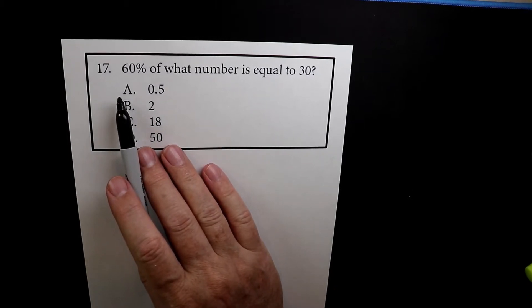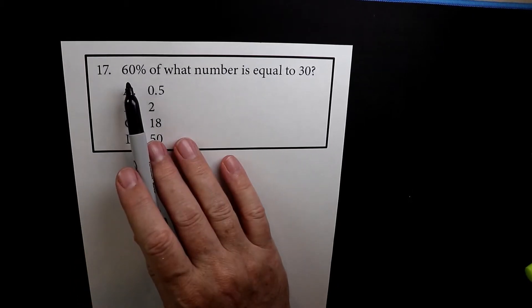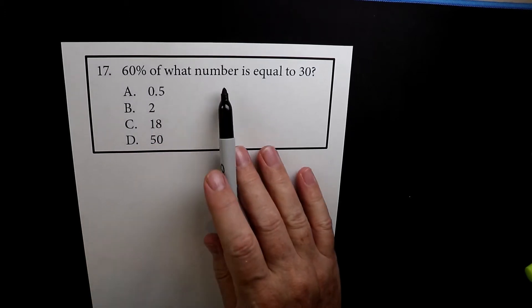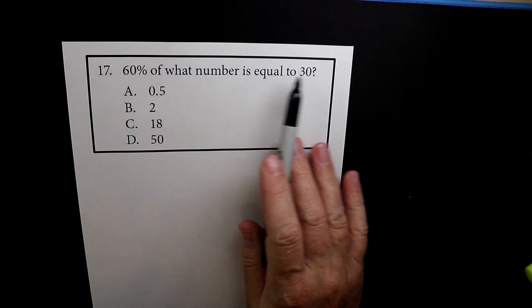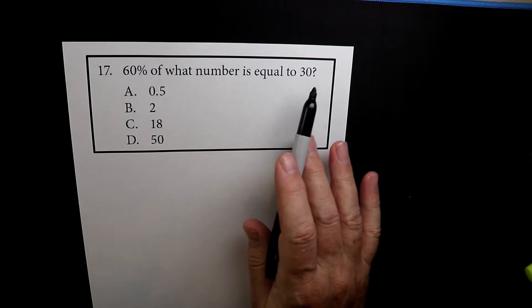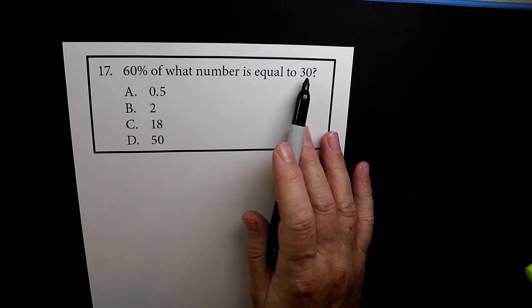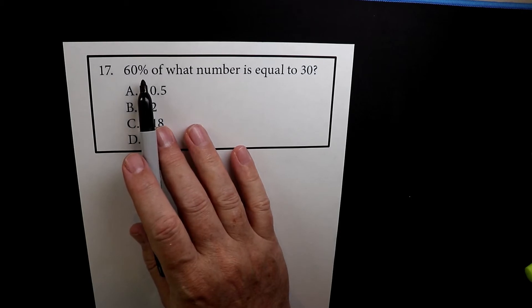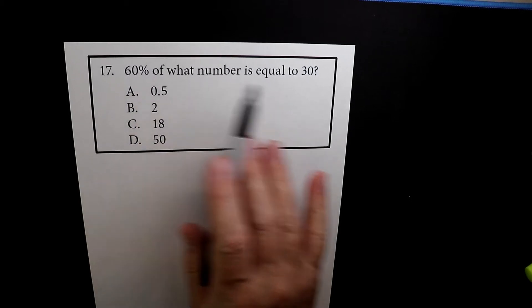This is number 17 of the first test, and what they're asking is 60% of what number is equal to 30? So what they're asking you to do is they're saying that 30 represents 60% of a larger number, a bigger number.